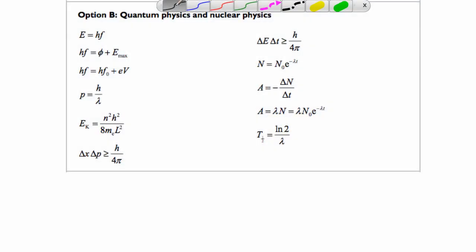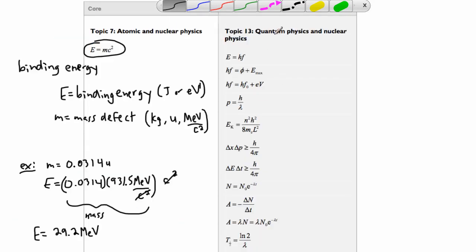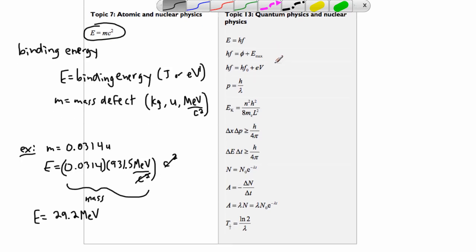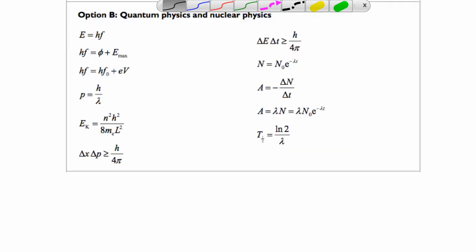So if you chose option B as your option, well then this is quantum and nuclear physics. This is identical to the additional higher level topic, I think it's topic 13, quantum physics and nuclear physics. These are going to be the exact same equations here. So I'm actually going to look at them on this instead so we have a little bit more room to work.